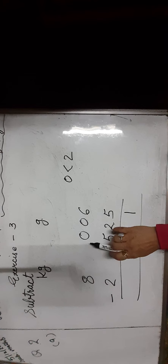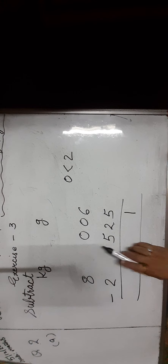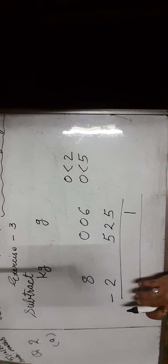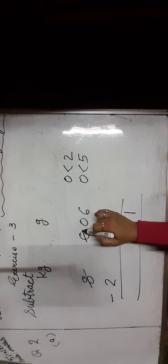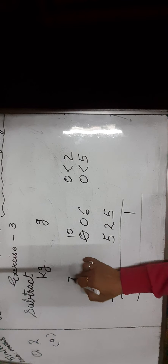Now subtract 2 kilogram 525 grams from 8 kilogram and 6 grams. Start with the grams column at the 1's place: 6 minus 5 is equal to 1 — write in the 1's place. Now 0 minus 2: 0 is smaller than 2, so we move to the next place, which is 0. Then 0 minus 5: 0 is also smaller than 5, so we move to the next place. Here 8 minus 2, so we borrow 1 kilogram to make 10 and 8 becomes 7.